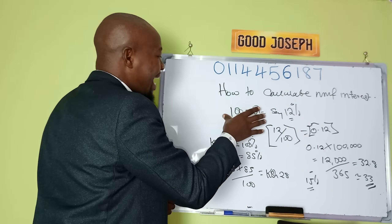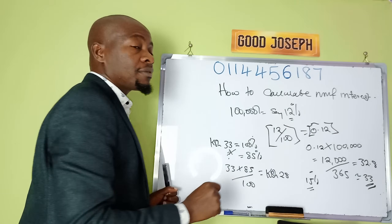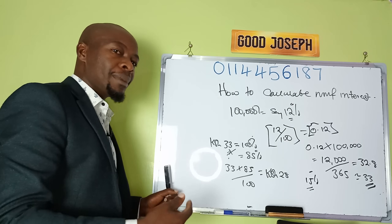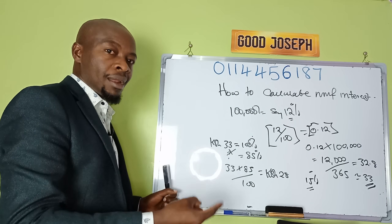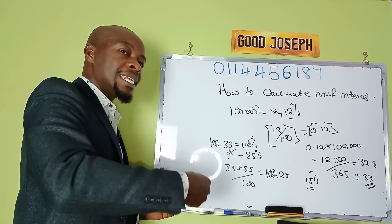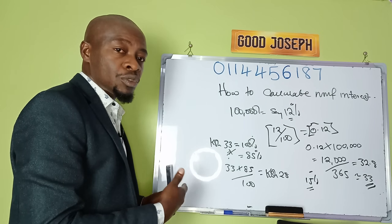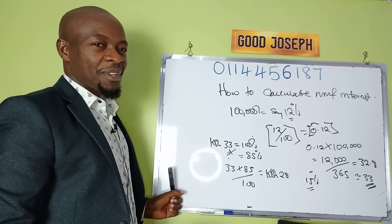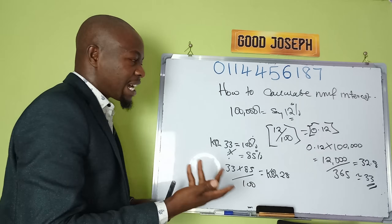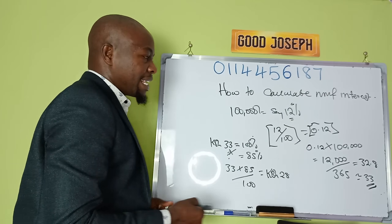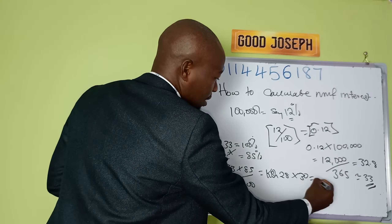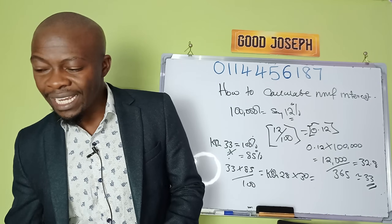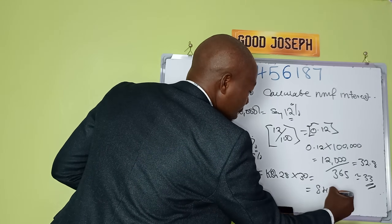This means once you take your 100,000 and invest in a money market fund where you are getting 12% per annum, you are likely to get 28 shillings increment every day. The 28 shillings continuously. Now, how many days are there in a month? Approximately 30. So 28 multiplied by 30 — that's around 841 shillings at the end of the month.